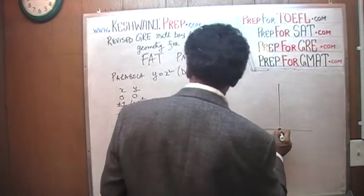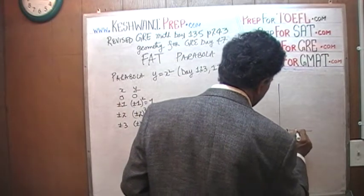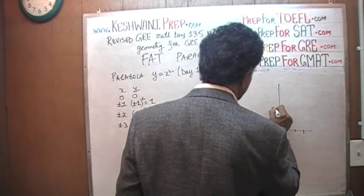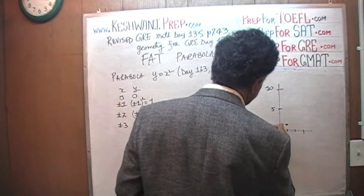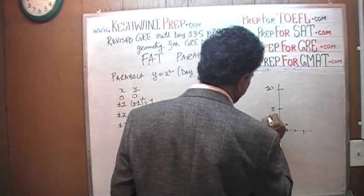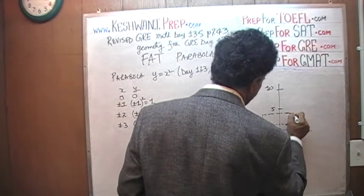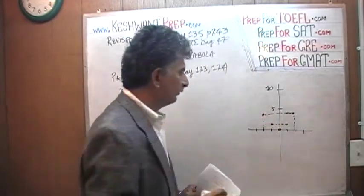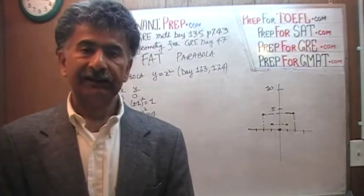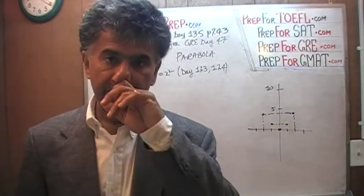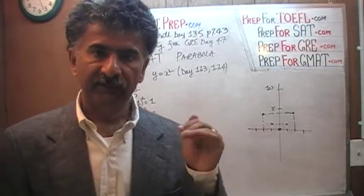So here we have our origin at 0, 0. When x is 1, y is 1. Let's call the y-axis markings 5 and 10. When x is 1, y is 1, so it's going to be somewhere here. As I explained in earlier videos, the scales on the x-axis and y-axis do not have to be the same — the scale just has to be consistent along a given axis, but they do not need to match between axes.